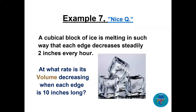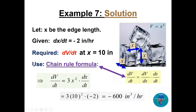Application 2: A cubical block of ice is melting so that each edge decreases steadily by 2 inches per hour. At what rate is the volume decreasing when each edge is 10 inches long? Let x be the edge length. Then dx/dt = −2 (negative because it is decreasing), and we need dV/dt when x = 10.